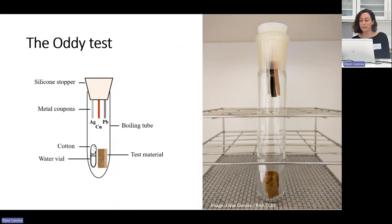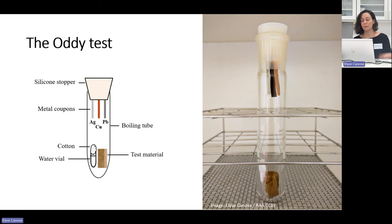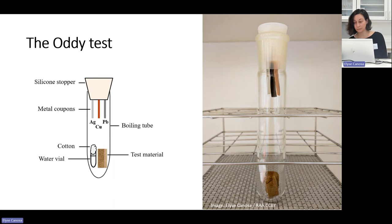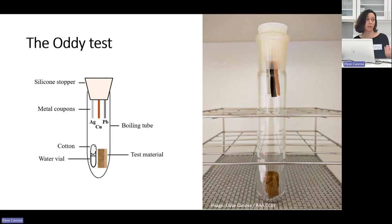How does the Oddy test identify materials that produce emissions we don't want in our cultural heritage environments? While there are many variations on the test, the basic idea remains essentially the same. The material you are interested in testing is placed inside a closed glass vessel along with a small amount of water and polished pieces of metal — referred to as metal coupons. These metal coupons are usually made of lead, silver, and copper. The vessel is typically placed in an oven at 60 degrees Celsius for four weeks, or 28 days, though there have been some variations in temperature and length of time.